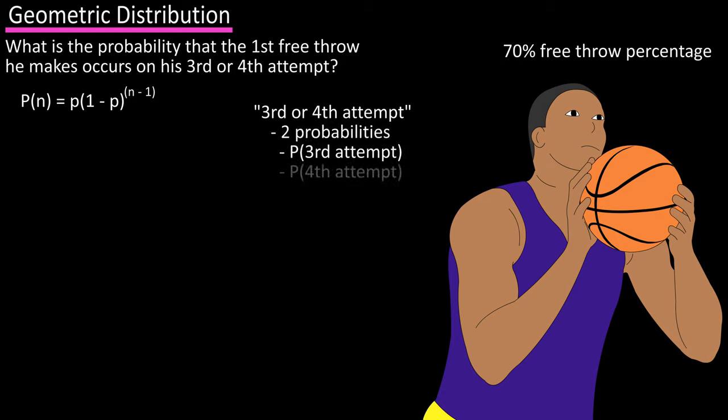which means we're going to have to calculate two probabilities, for the third attempt, or third trial, and for the fourth attempt, or fourth trial. And since this question says third or fourth, we will then add them together. Using our formula,